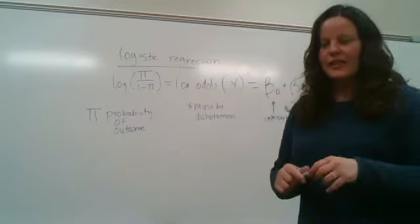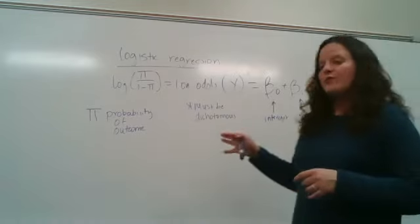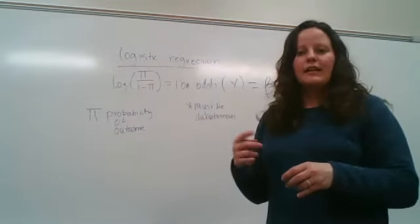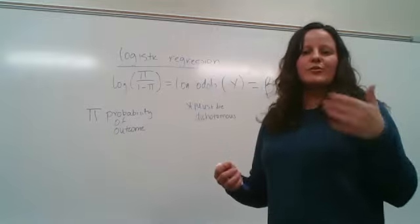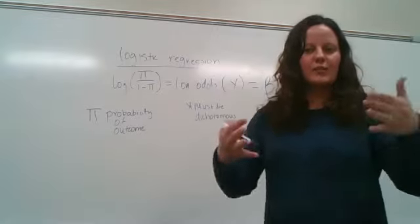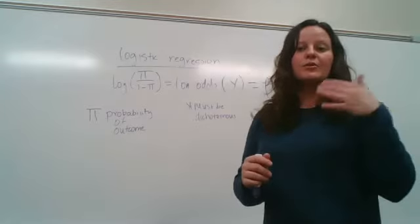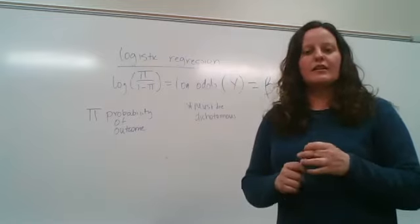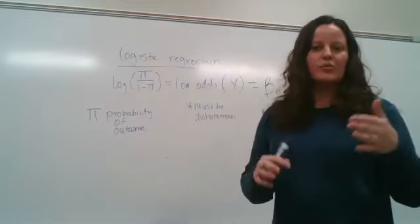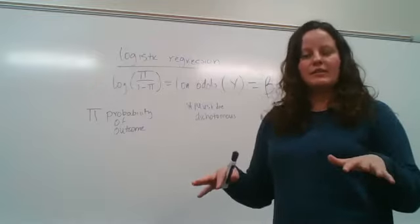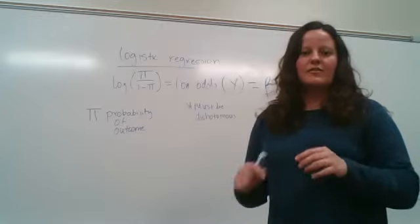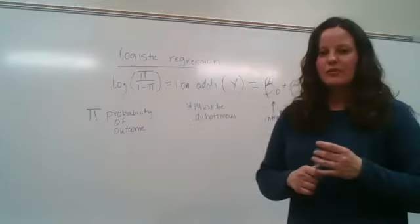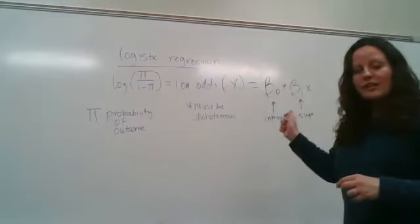You want to code your outcome so that the experience you're most interested in is coded as 1, and not having that experience is coded as 0. If your outcome is not already two categories, you'll need to make it that way. Make sure 1 represents the group you're interested in — people who experience anxiety, depression, binge drinking, or have used campus services — and 0 represents those who haven't.